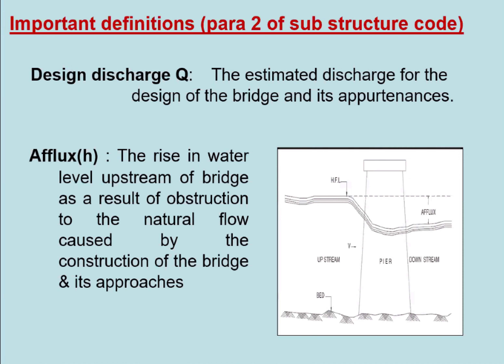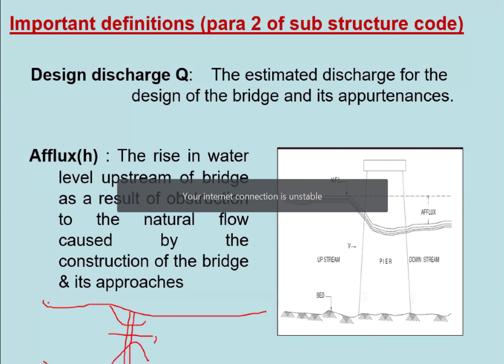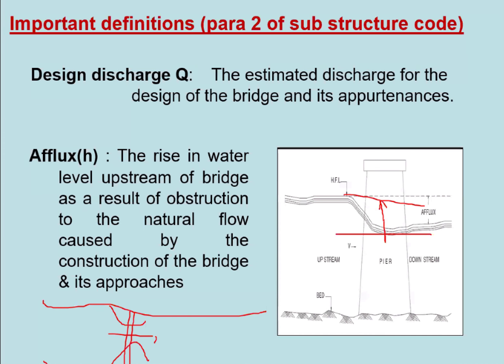Another important term is afflux. Whenever we are calculating the design discharge and deciding the span opening, afflux must be taken into account. When there is free flow and we construct a waterway, it reduces the area, so velocity increases near the bridge compared to the upstream side. There is a gain of kinetic energy just under the bridge, causing heading up of water on the upstream side — that is called afflux. Whenever we decide any clearance or freeboard with respect to water level, we must take afflux into account.